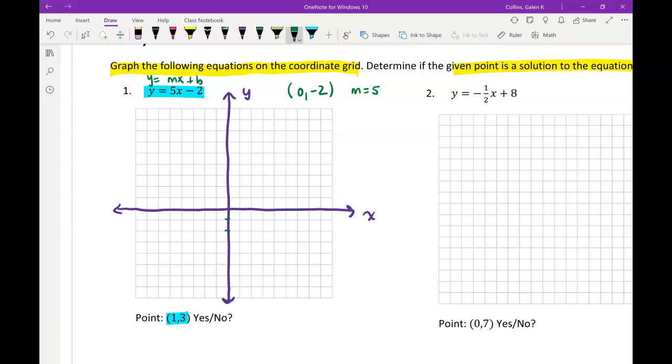So on my y-axis, I'm going to go down to negative 2. I'm going to put my y-intercept right there, and then my slope is 5. And I could think of that as rising 5, running 1. So I'm going to move up 1, 2, 3, 4, 5 spaces up, and 1 to the right.